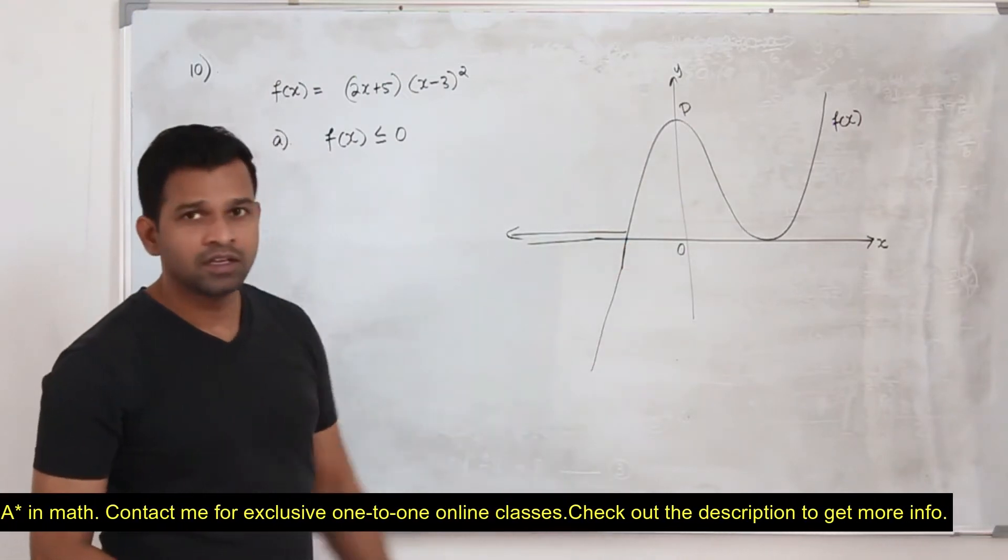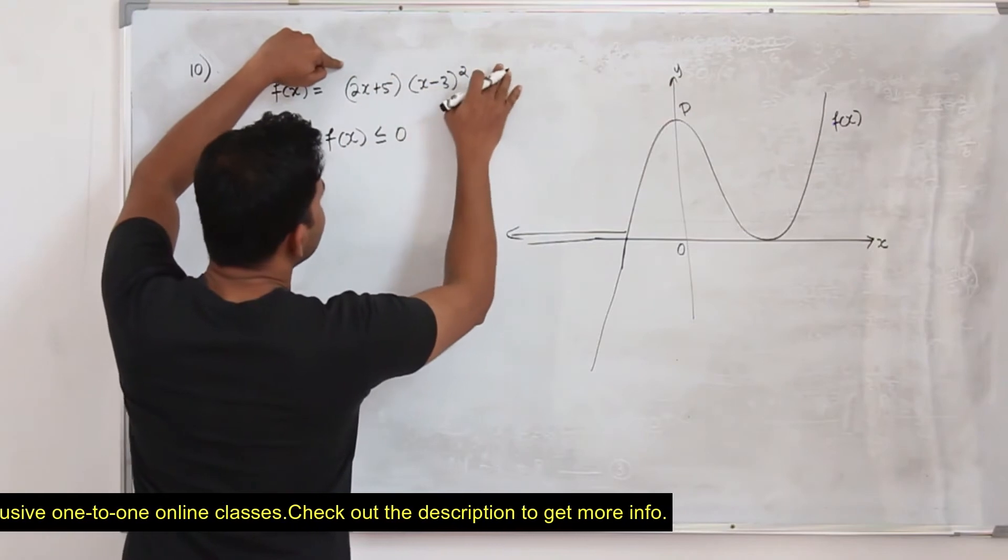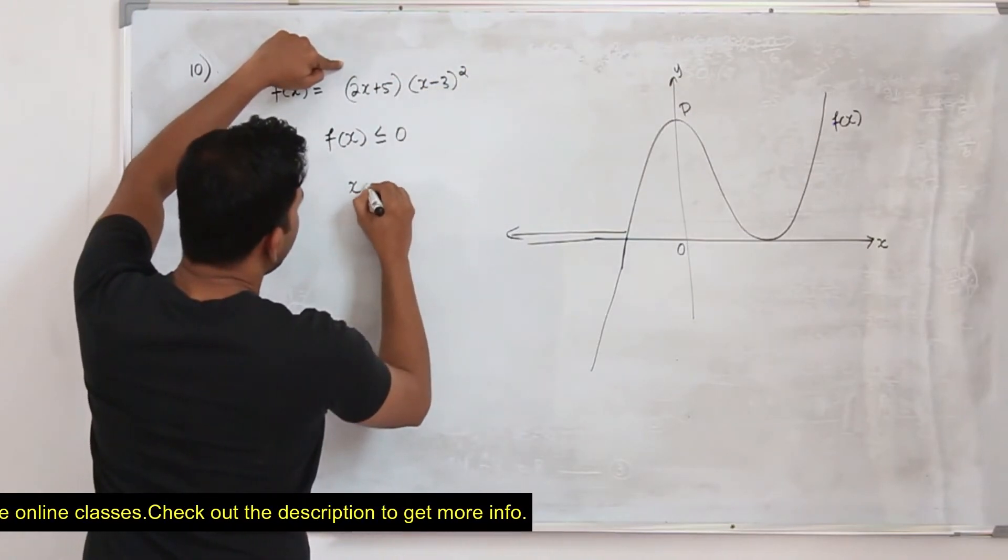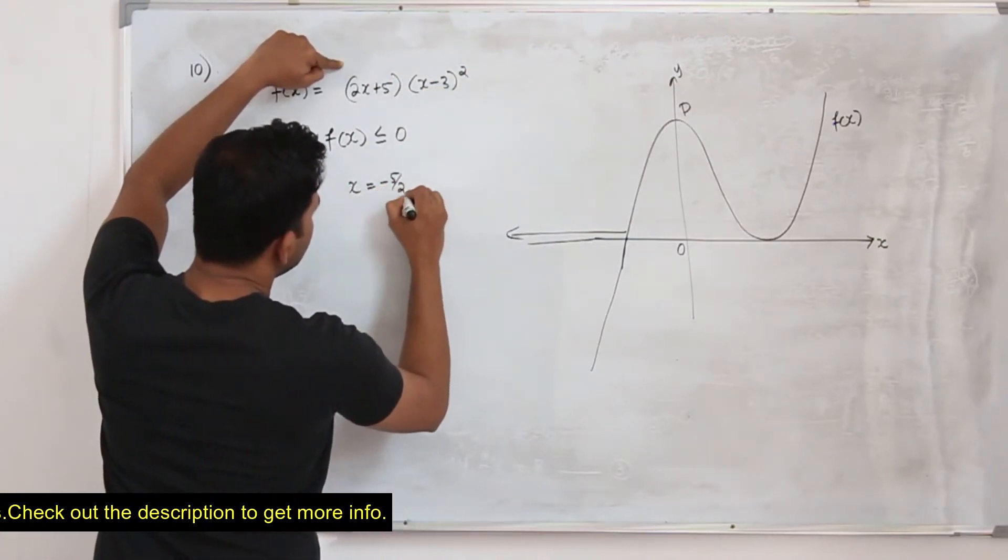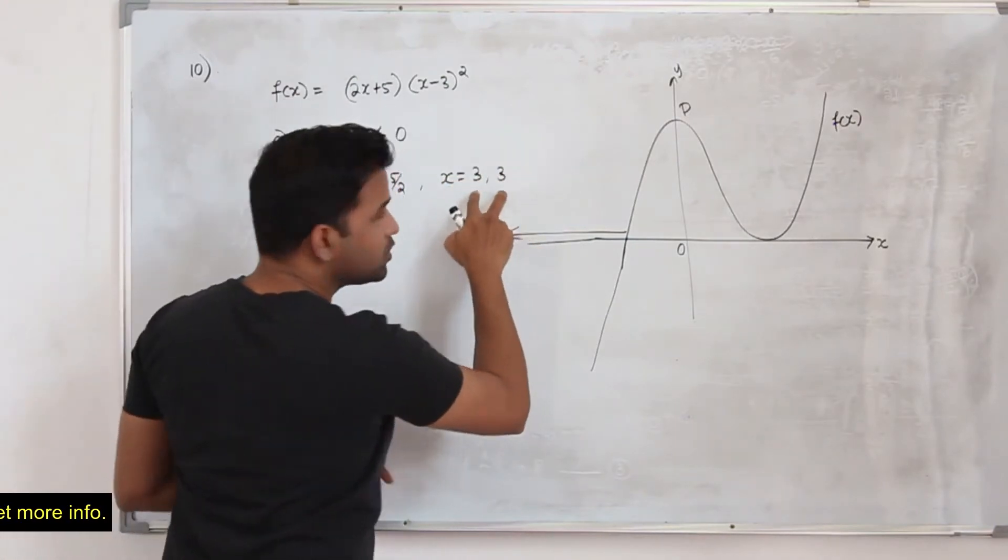That's what we need. So we need this point. When you solve this function, when you take it as equal to 0, you will get two x values: minus 5 upon 2 and x is equal to 3. Two equal solutions.